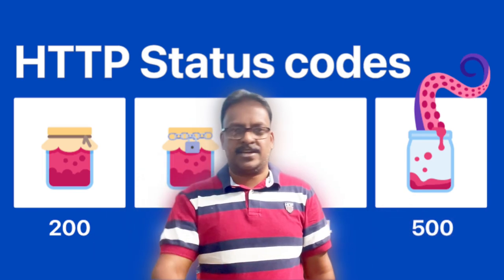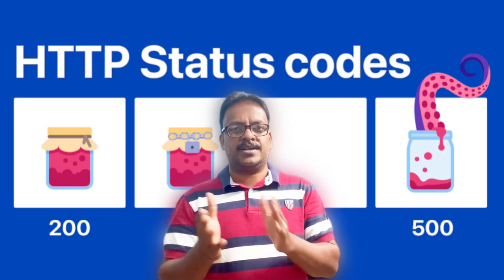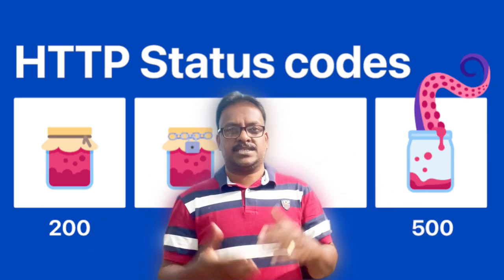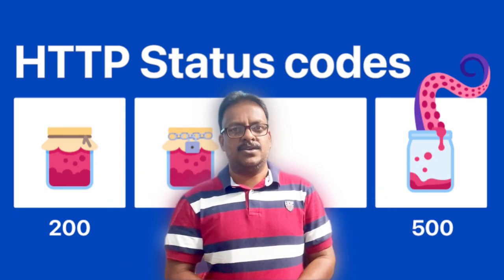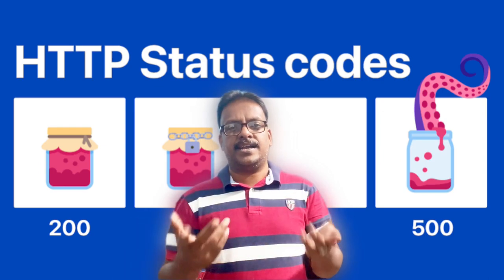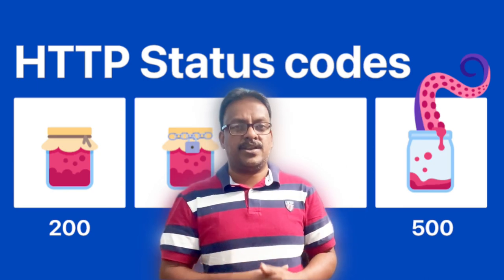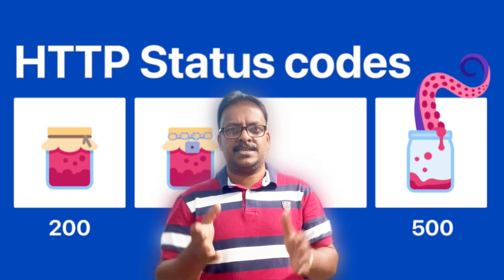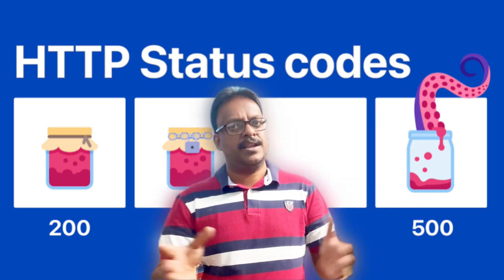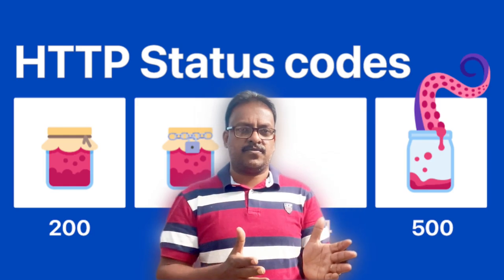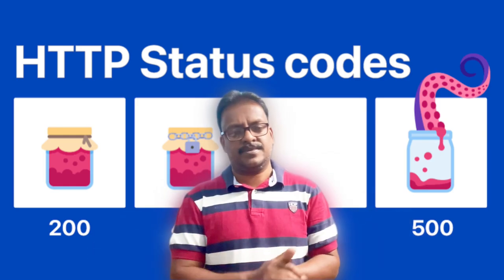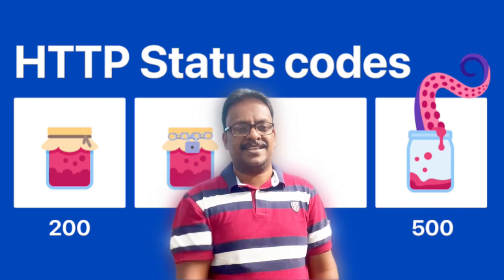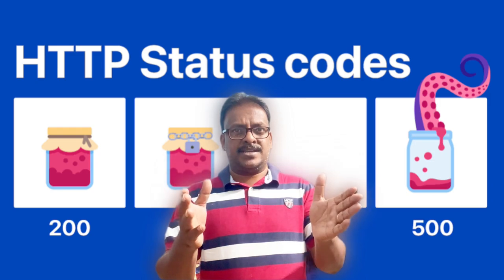Status code 503 happens when the service itself is unavailable — this is a commonly occurring situation when a service is down. Status code 504 is a gateway timeout, which occurs when there is a timeout with the gateway. Those are the 500 series HTTP status code details.